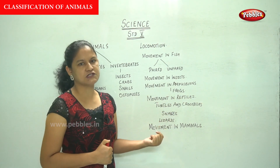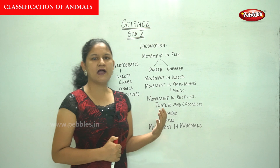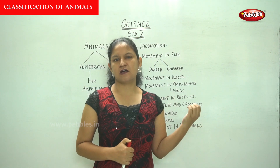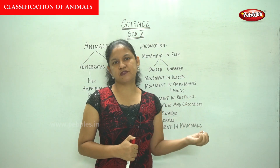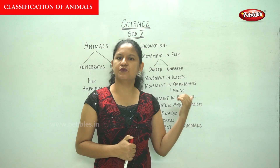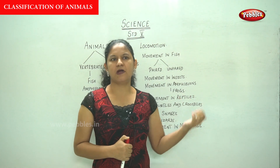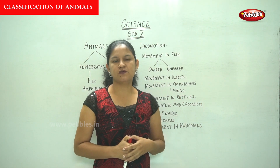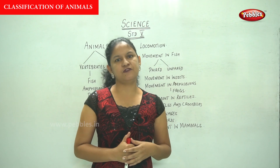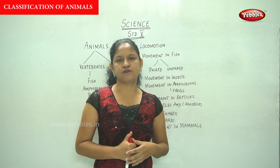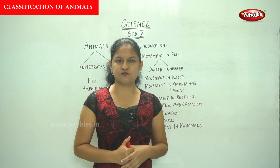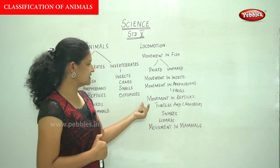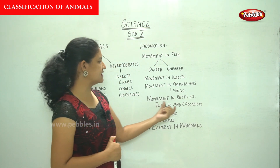Moving on to movement in amphibians: frogs are animals that can live both on land and water. While on land, the forelimbs and hind limbs help them to jump and crawl. While in water, the padded feet of the frog help it to swim.